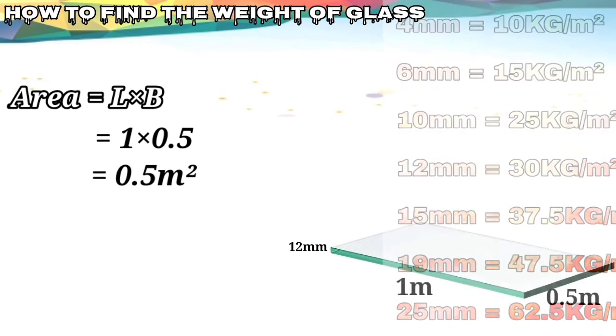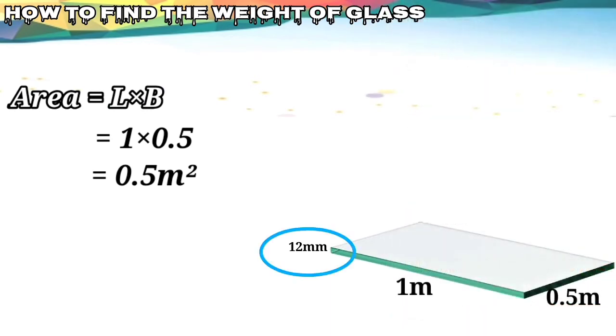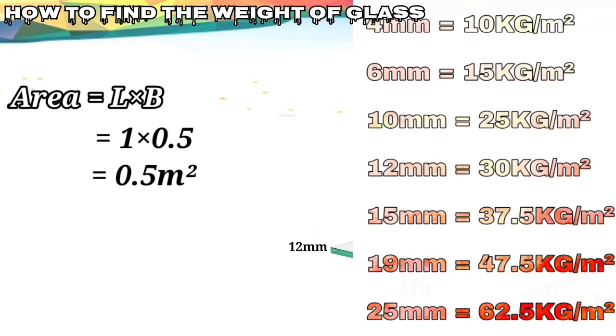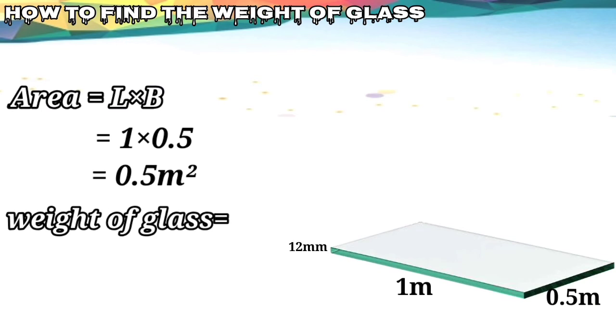Here we already assume that our glass is 12mm, so for 12mm there should be 30 kg per meter square.